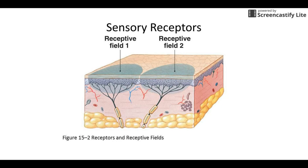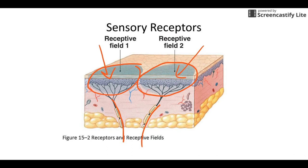Here's a picture showing the receptive field. You've got one neuron here and another neuron here — this is the area each is responsible for. These could be two cold receptors. If you put something cold in one area, that neuron sends the signal. If it hits both of them, both send impulses to the brain. Each neuron has a designated area — that's referred to as a receptive field.